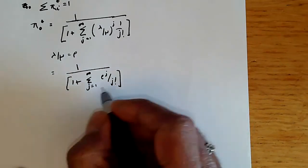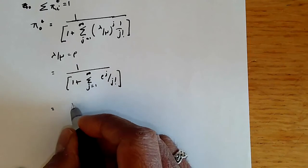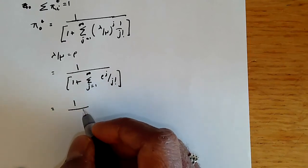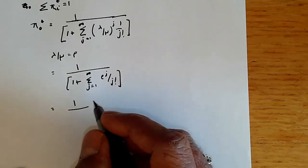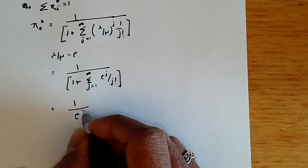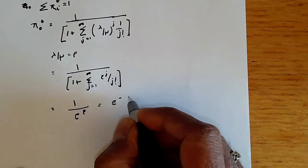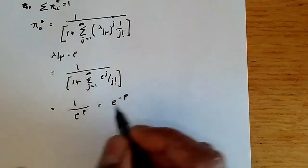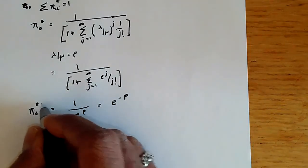And this is just the expansion for e to the x. So this becomes 1 over e to the power rho, which is going to be e to the minus rho. So pi 0 star is going to be e to the minus rho.